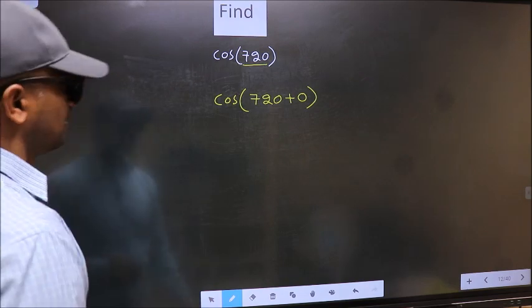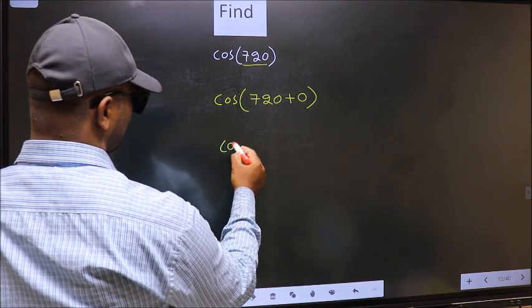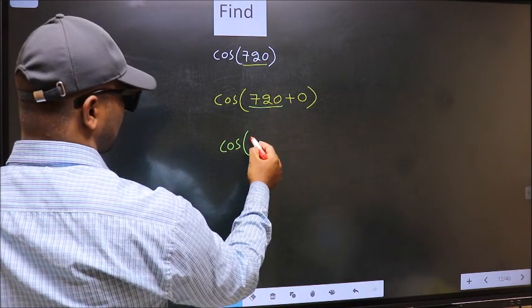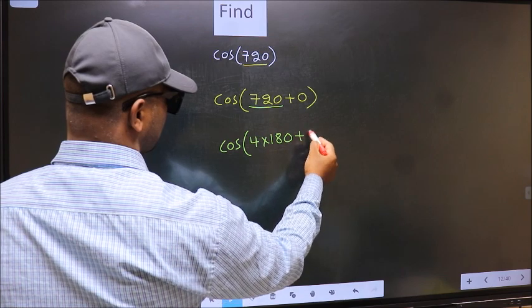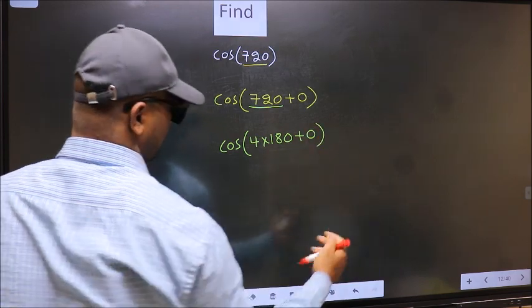Next, cos, in place of 720 now we should write 4 into 180 plus 0.